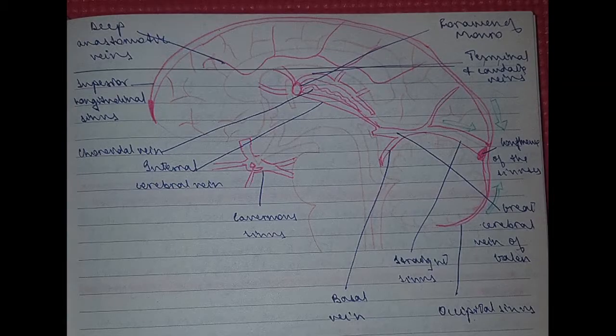So this is the medial aspect of the cerebrum. Here you can see the important veins which would be the choroidal vein, the internal cerebral vein which goes to become the great cerebral vein of Galen. And it is also joined by the basal vein. And these empty into the straight sinus.